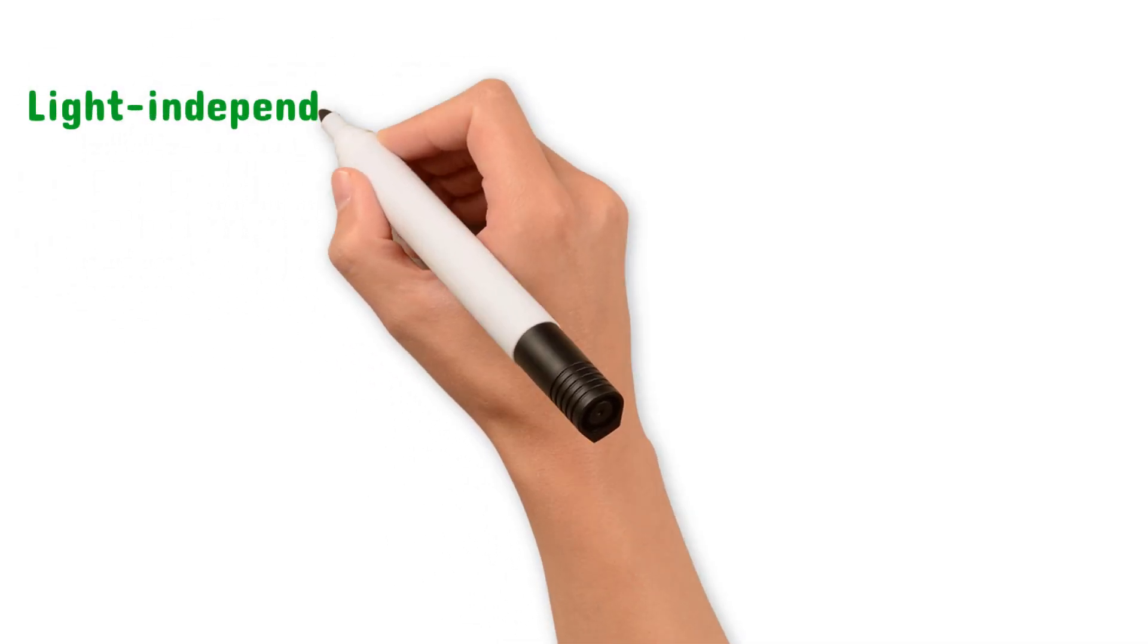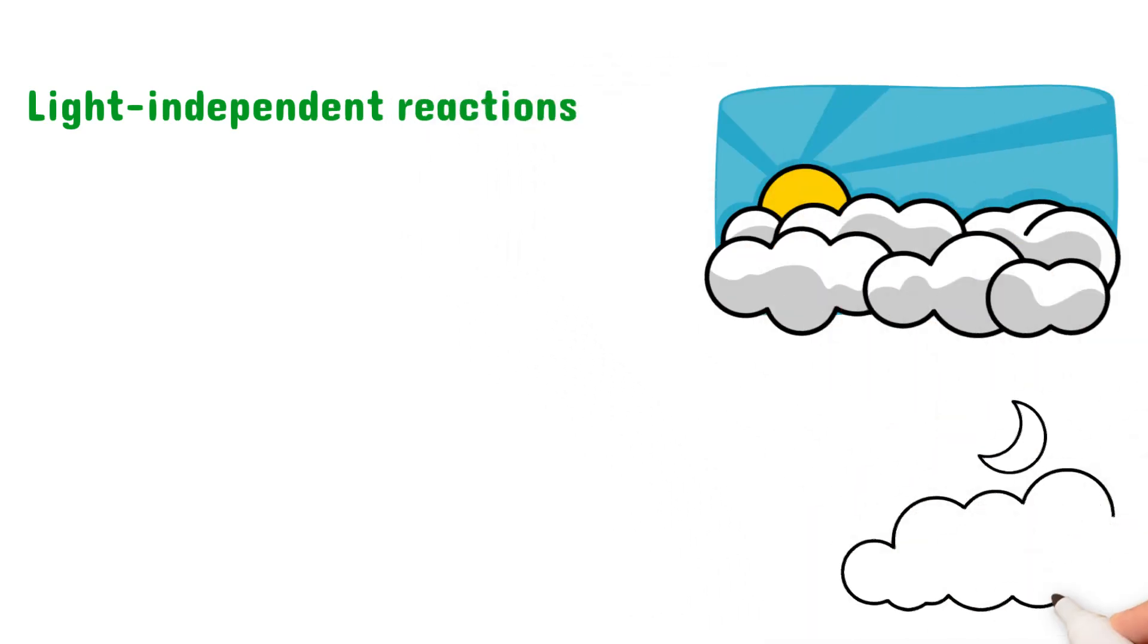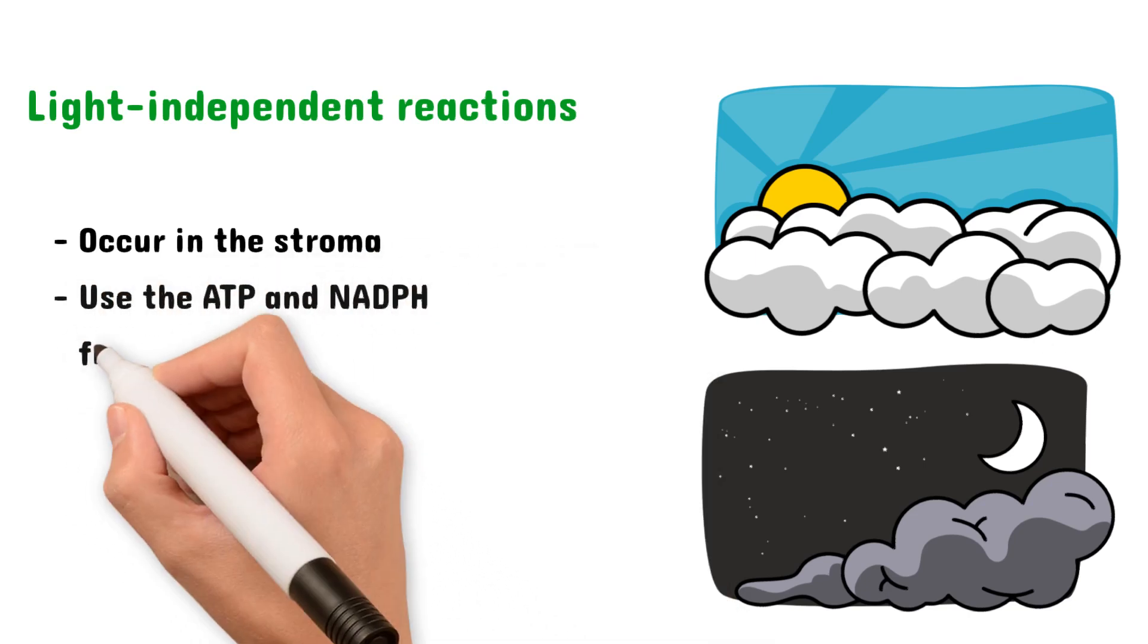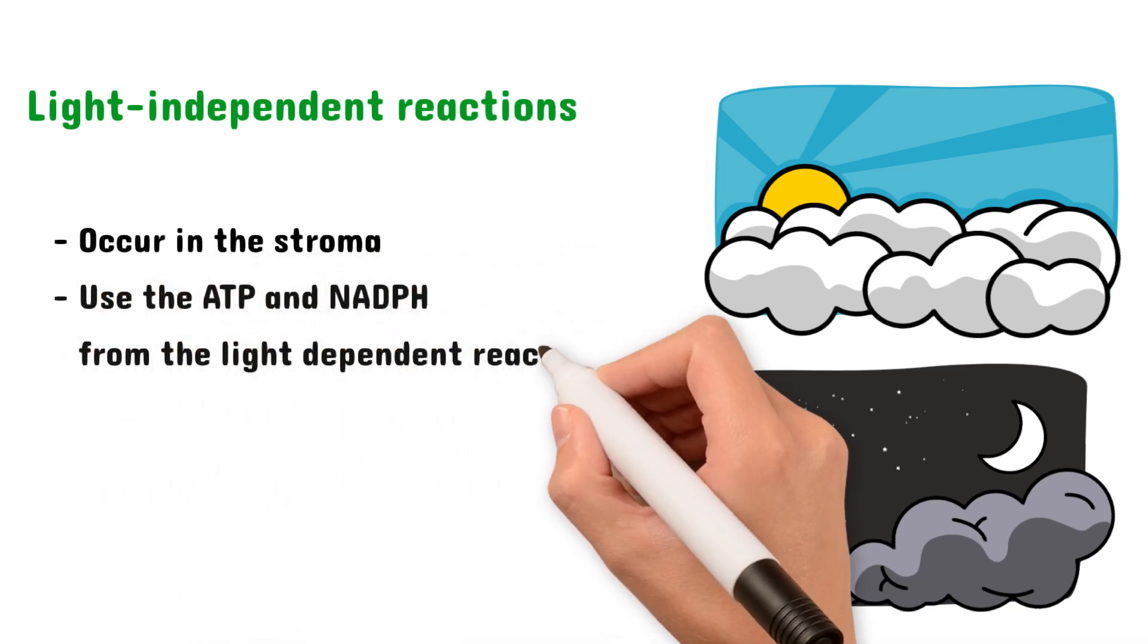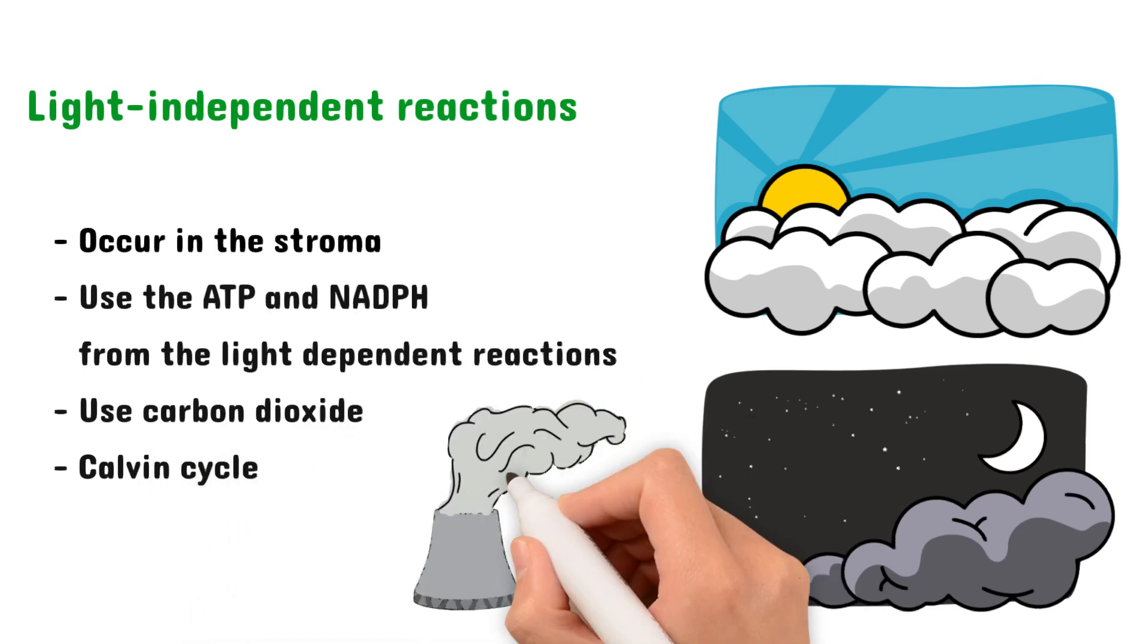Finally, let's look at the light-independent reactions. These reactions can happen both with and without light. They occur in the stroma, they use ATP and NADPH from the light-dependent reactions, they use carbon dioxide, and they're often referred to as the Calvin cycle.